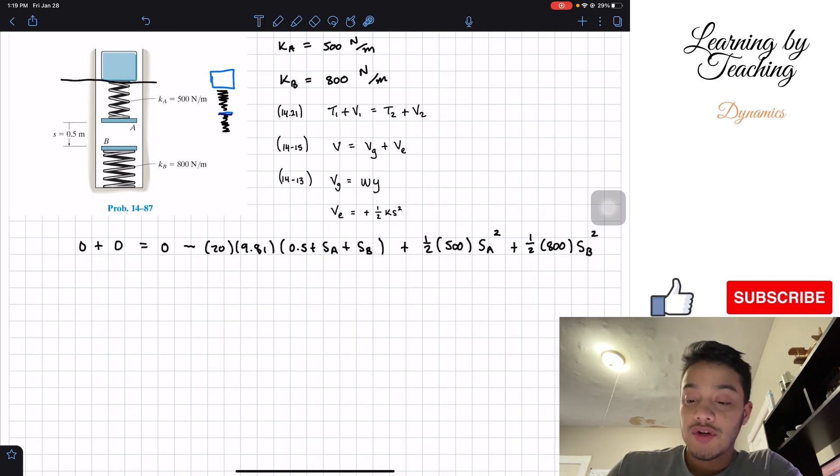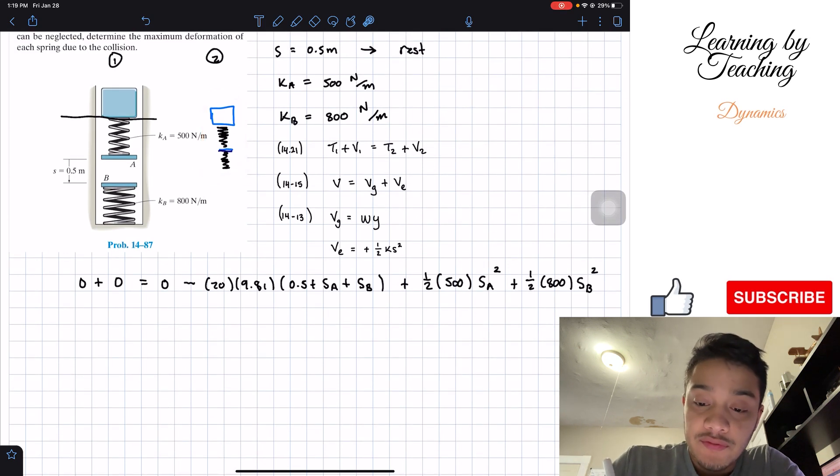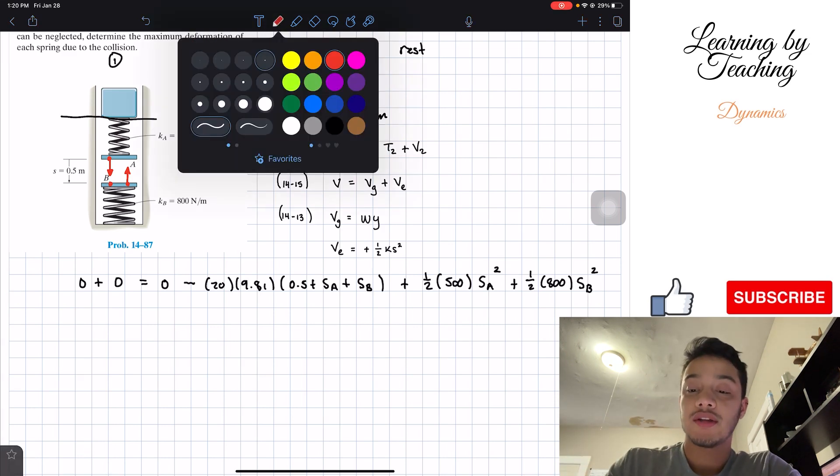This is our equation. If we pay attention, we have two variables and only one equation. So in order to solve this, we have to think a little bit outside of Chapter 14 and realize that in our position 2, the force of spring A has to be the same as the force of spring B. Since both of these are touching each other at the same point, that means that plate A is applying a force to plate B and plate B is applying a force to plate A, and both of them are equal to each other.